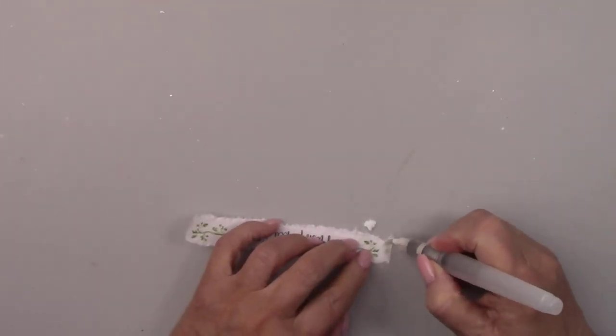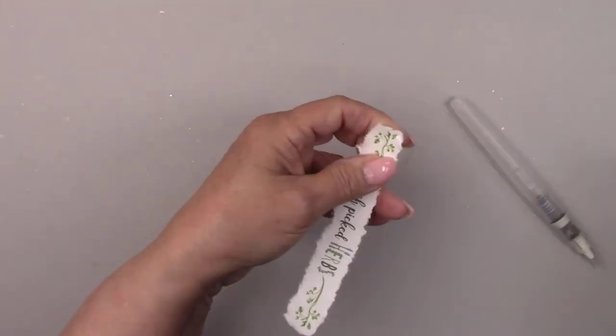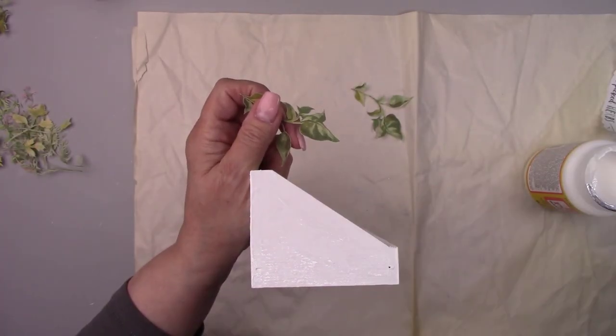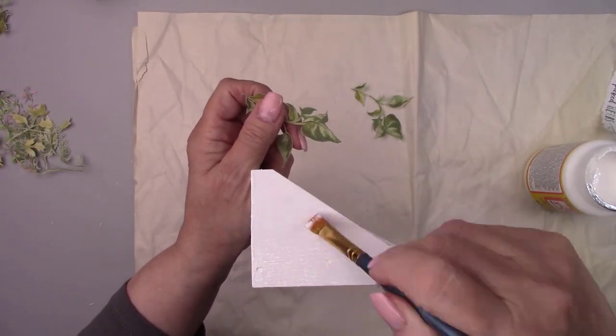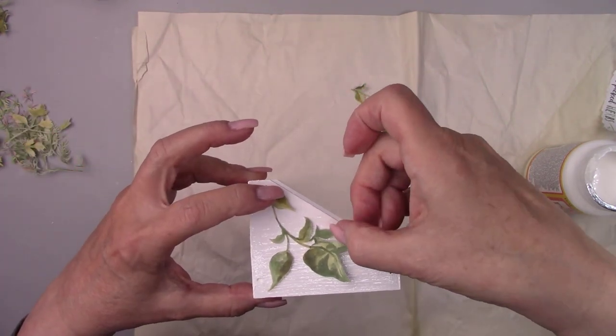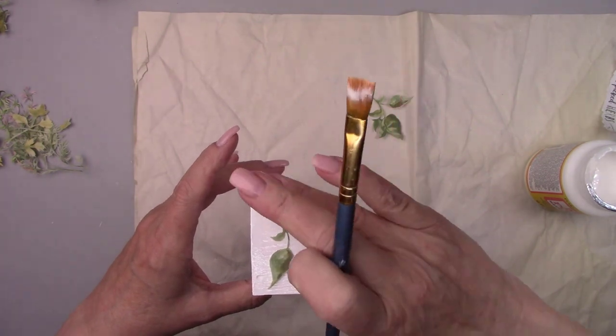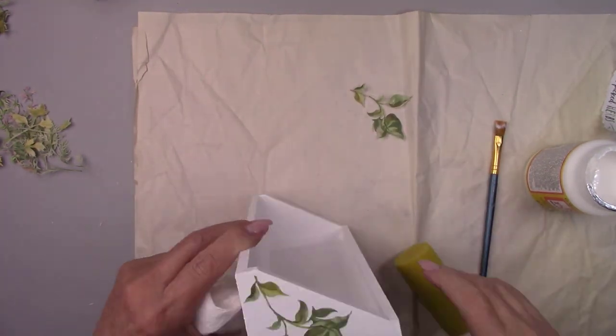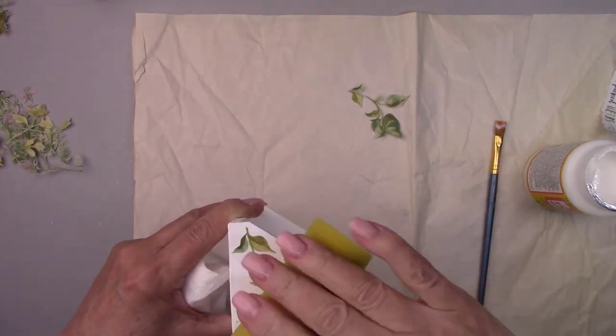Where are you watching from? Let me know in the comments. I love hearing from all of you. And now it's time to start decoupaging all these cute little herbs on the three boxes. I'm starting with the base and I'm using Mod Podge. I'm rolling over the image with a round sponge to remove any air bubbles.